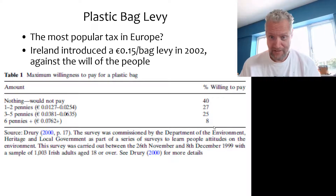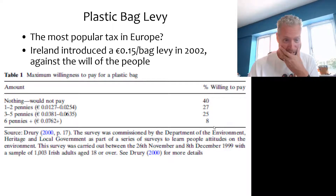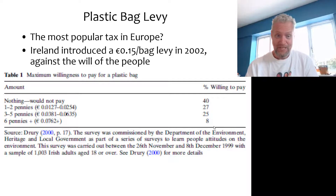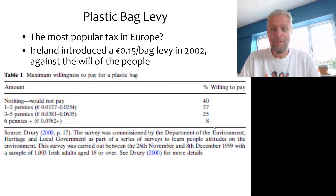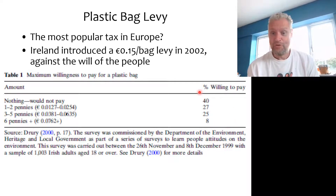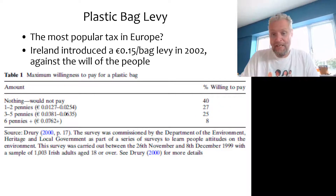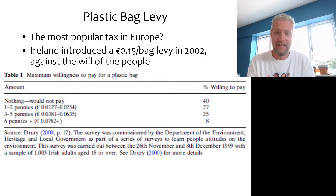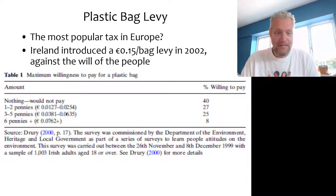Ireland introduced a plastic bag levy in 2002 — technically a levy, not a tax. Table 1 presents an ex-ante willingness-to-pay study showing how much people would pay for a plastic bag in a supermarket. A large minority were unwilling to pay anything; around 52% were prepared to pay only a few pennies per bag, and only 8% were prepared to pay 6p or more. This was very unpopular, but the government pushed it through for political and environmental reasons.